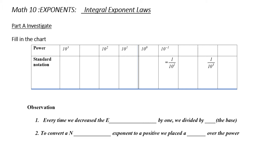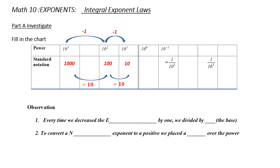We're going to find the power and write something in standard notation. Let's start with 10 cubed, which is 1,000. Next, 10 squared — subtracting 1 from the exponent — is 100. So what did I do to go from 1,000 to 100? I divided by 10. Every time I subtract 1 from my exponent, I'm dividing by 10, or the base.